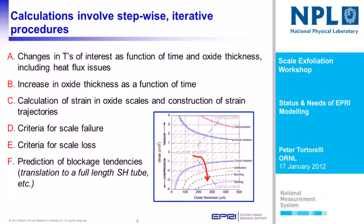The calculations involve a stepwise additive procedure. We start with temperature and track it from there — we look at changes in temperature as a function of time and oxide thickness, take into account heat fluxes and how temperature profiles change as the oxide thickens. We look at the increase in oxide thickness as a function of time, calculate the strains, construct strain trajectories, see when we exceed the criteria for scale failure, and translate that into a criteria for scale loss or exfoliation. We then go into sub-modules that address blockage tendencies, going from a point-to-point type of calculation to a full length of superheater tube.